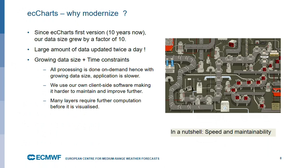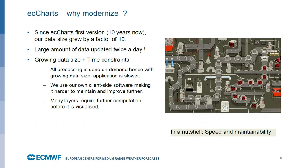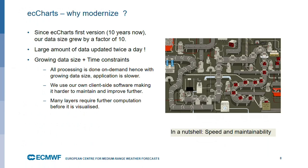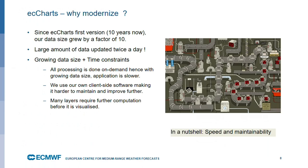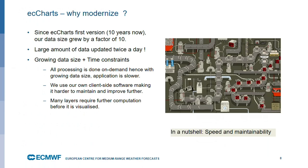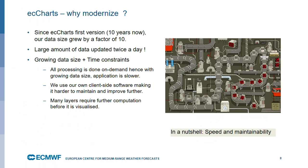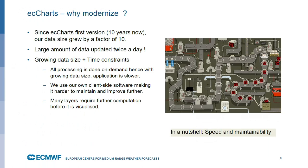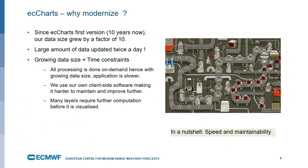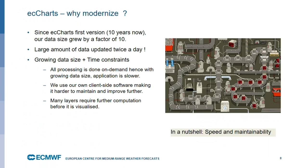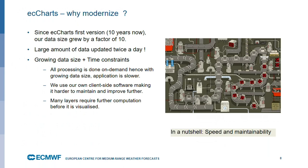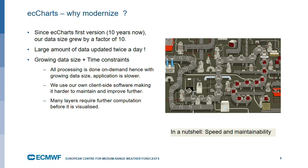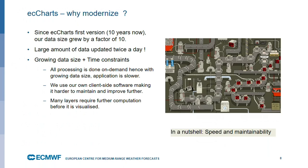So those two things — the speed, because of the growing resolution of our data, and the maintainability, because we have all this GIS-related code written by ourselves — are the main two reasons that we had to modernize our software.